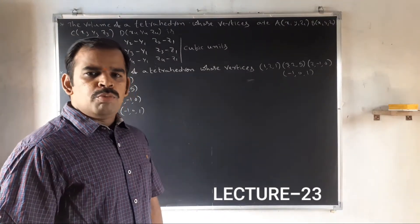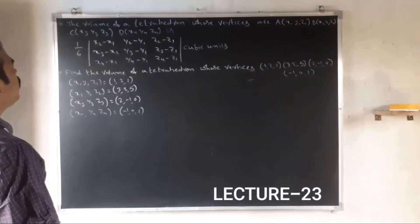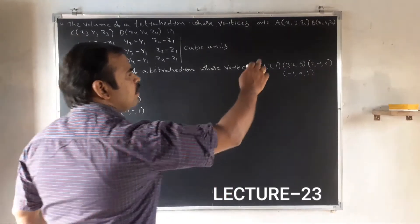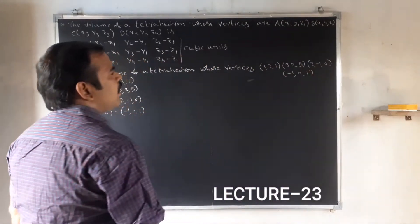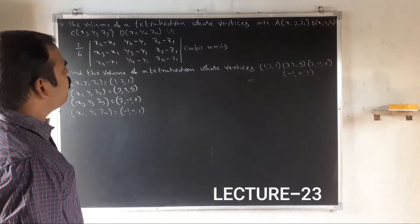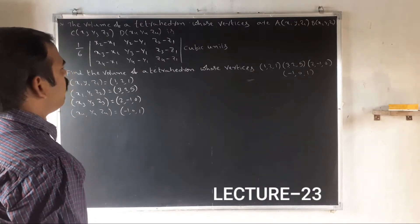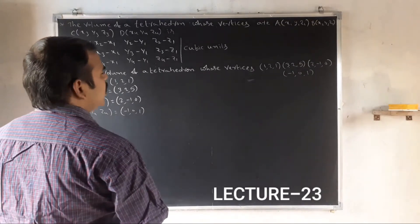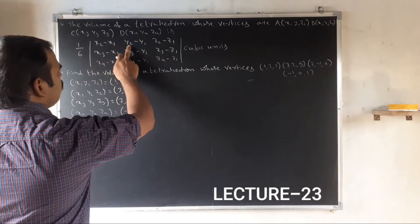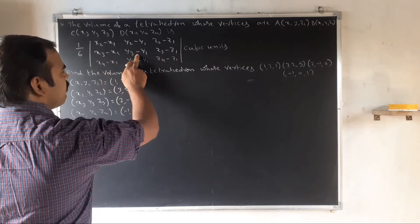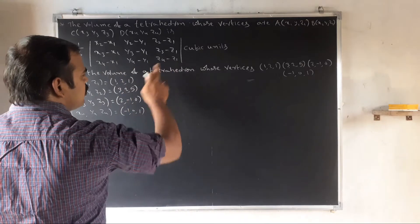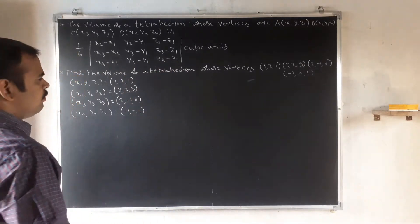Good morning, dear students. The volume of a tetrahedron whose vertices are A(x1, y1, z1), B(x2, y2, z2), C(x3, y3, z3), D(x4, y4, z4) is given by: Volume = (1/6) times the absolute value of the determinant with rows (x2−x1, y2−y1, z2−z1), (x3−x1, y3−y1, z3−z1), (x4−x1, y4−y1, z4−z1), in cubic units.